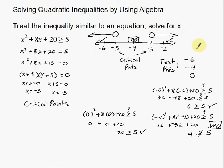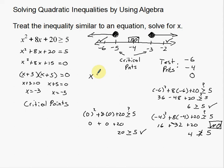Since this is a greater than or equal to inequality, I also need to include negative 5 and negative 3 themselves. So the solution is: x is less than or equal to negative 5 for the left region, and x is greater than or equal to negative 3 for the right region.